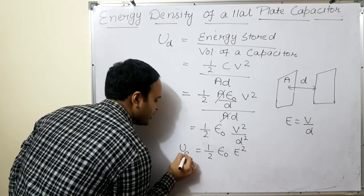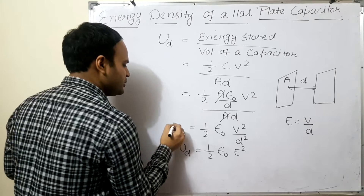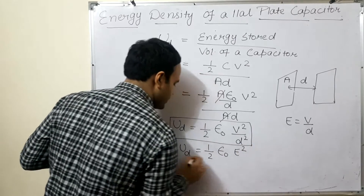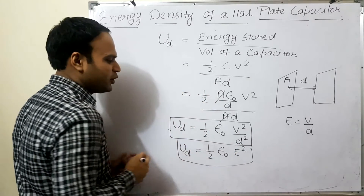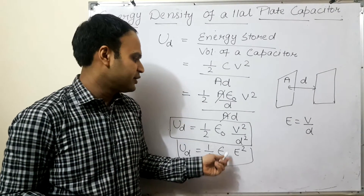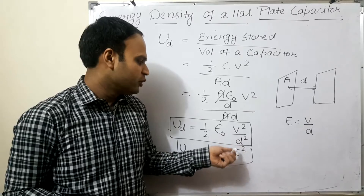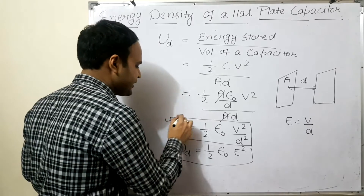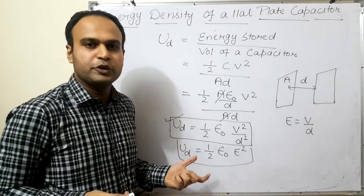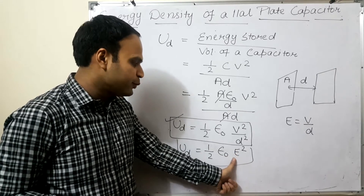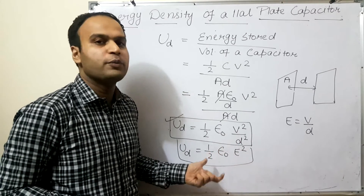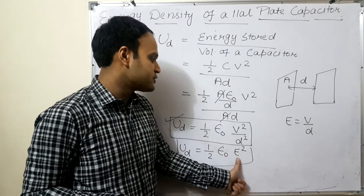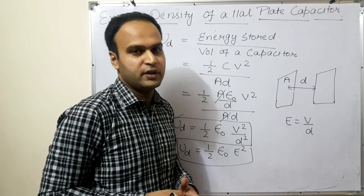So this is the energy density formula. This formula is important for exams — if a numerical problem comes, you have to remember this formula. If you remember that E = V/D, you can derive it quickly. So remember: energy density = ½ε₀E². Clear students? Any doubt?